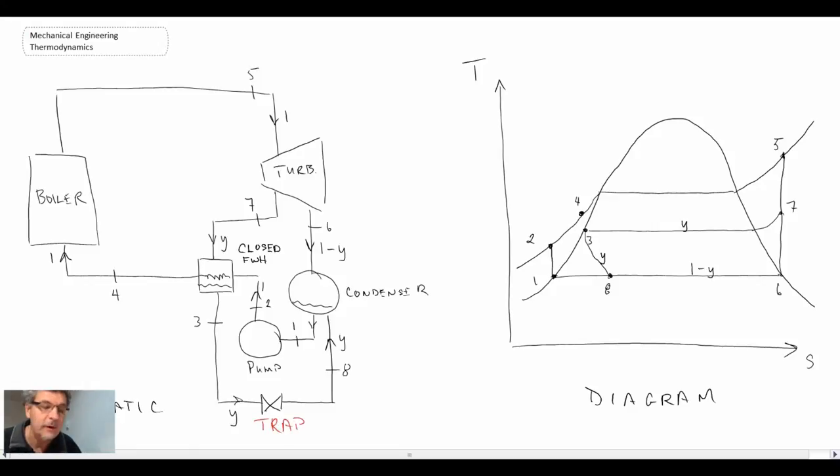So we don't have two pumps, we only have one pump here and we have this trap device. Now traps or throttling processes are characterized as being constant enthalpy processes and consequently what we can say is that in the trap h3 equals h8. So it's a constant enthalpy process, the enthalpy will not change. And with that, if we can determine h3, we then know h8 and from that we can then get the quality at 8, and that is assuming that we know the pressure within the condenser.